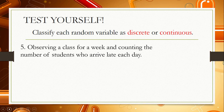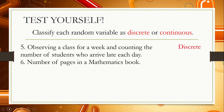Number 5: observing a class for a week and counting the number of students who arrive late each day. From the word 'counting,' this is a discrete random variable. Number 6: the number of pages in a mathematics book. Pages are countable, so this is also a discrete random variable.